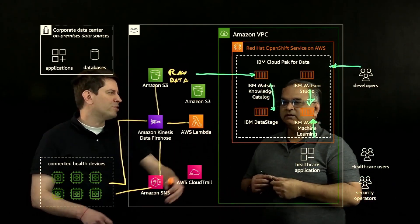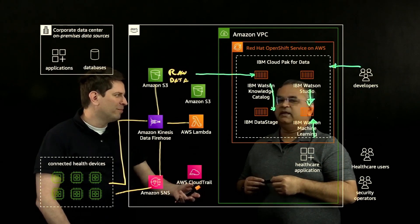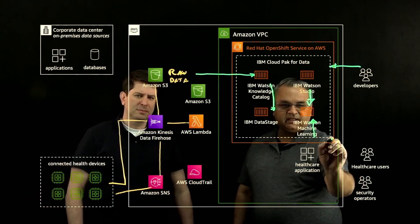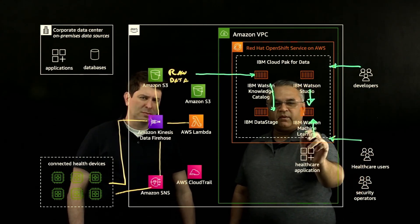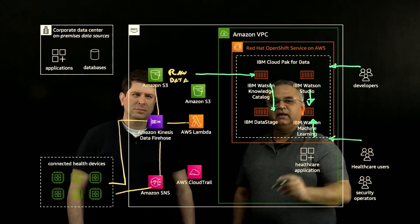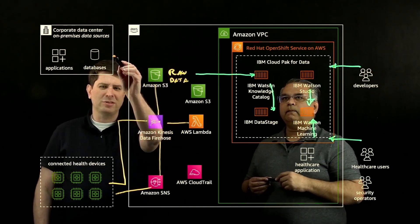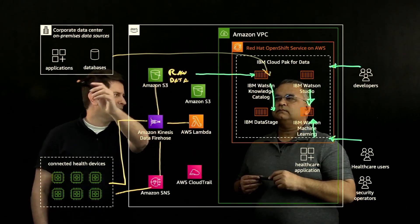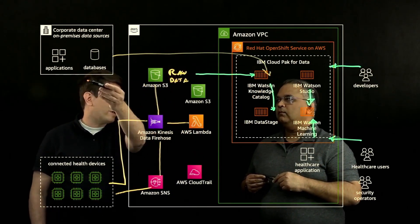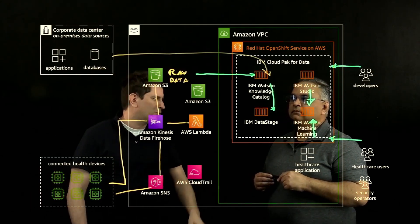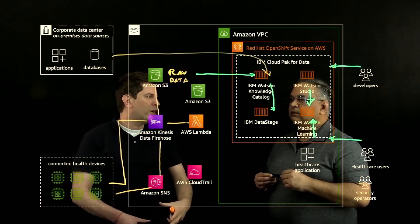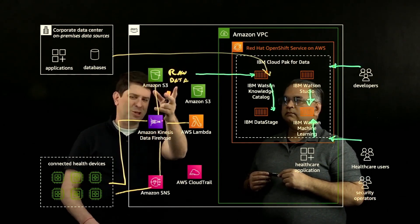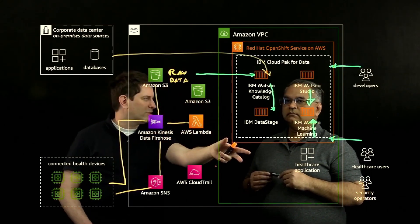So these are inference endpoints that the healthcare applications are using to predict the patient outcome. The healthcare users use this healthcare application, which provides those predictions to the end users. And combining into this equation, with Watson Knowledge Catalog, the data coming from patient systems of records — either on traditional databases or traditional applications — you're combining the IoT data with the patient data and patient history data to generate these predictions.